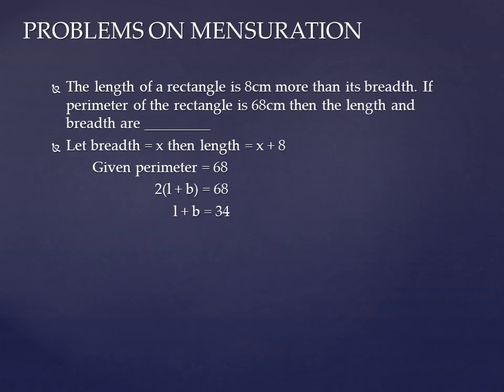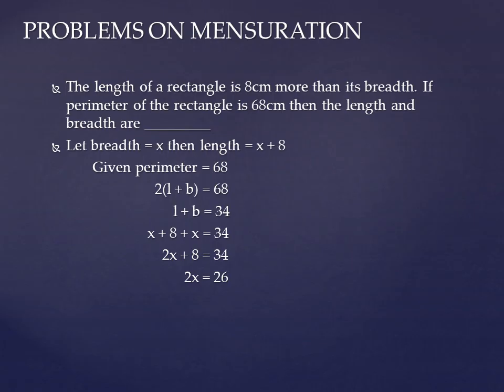Now substitute the values we assumed: breadth equal to x and length equal to x plus 8. Substituting, l value x plus 8 plus b value x is equal to 34. Simplifying: x plus x gives 2x, and 2x plus 8 is equal to 34. Transposing plus 8 to the other side, it becomes minus 8. So we get 2x equal to 34 minus 8, which is 26.